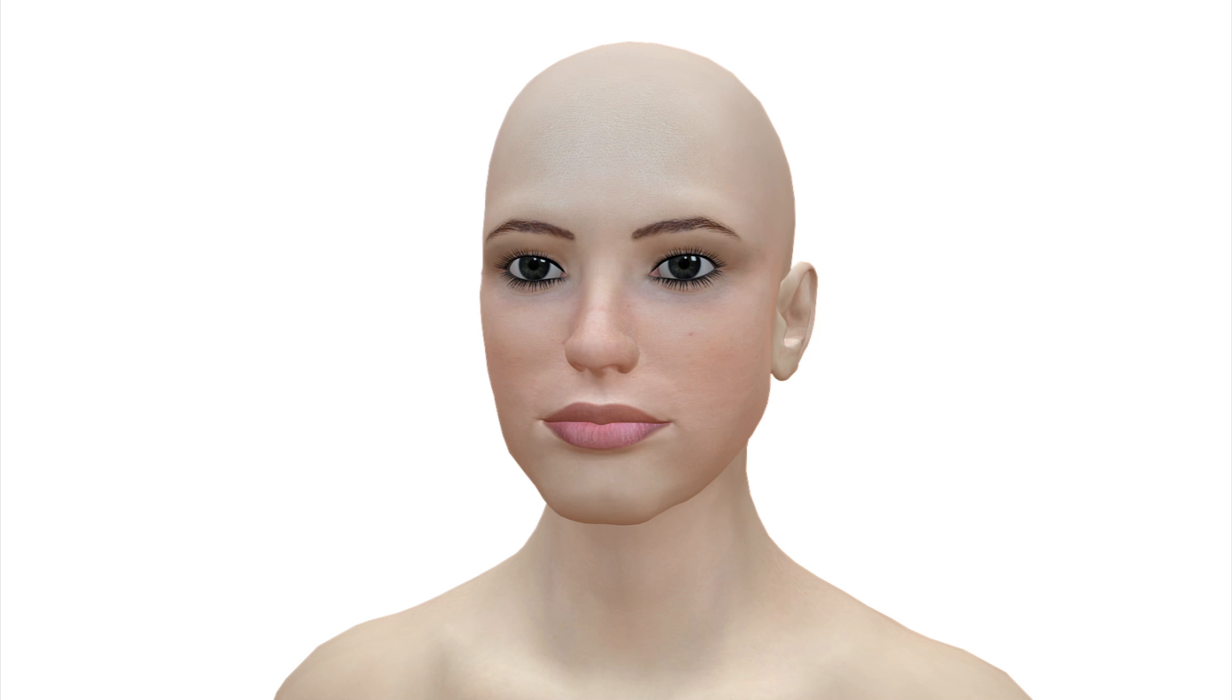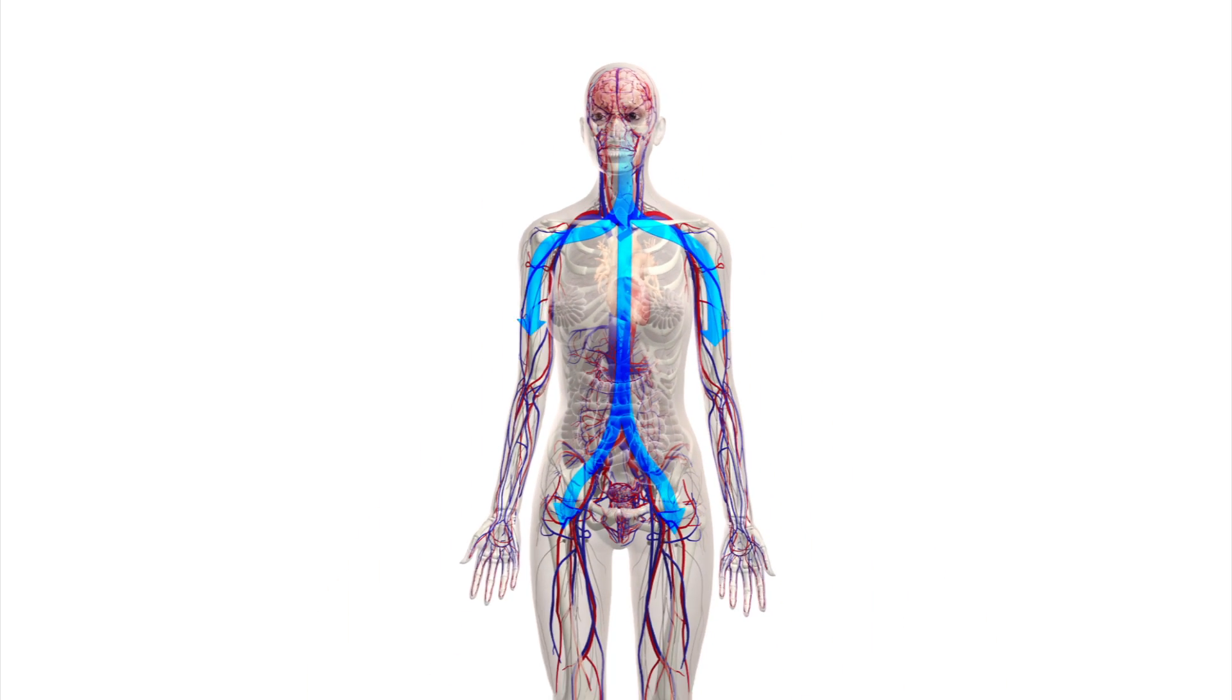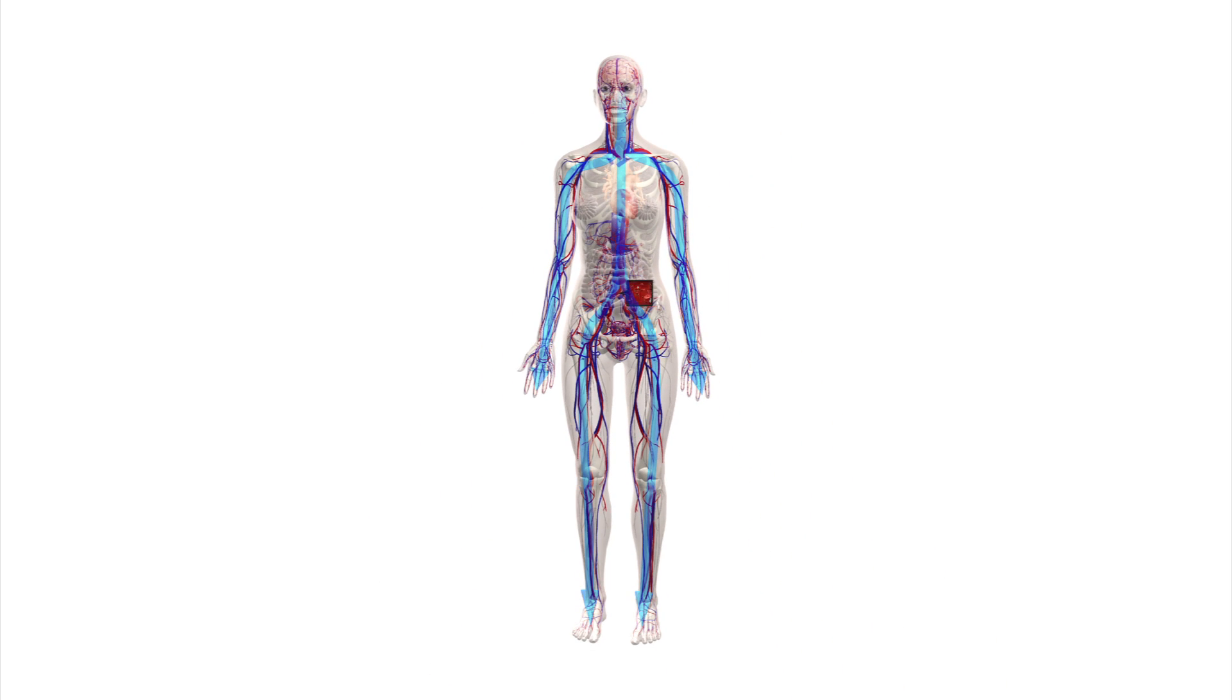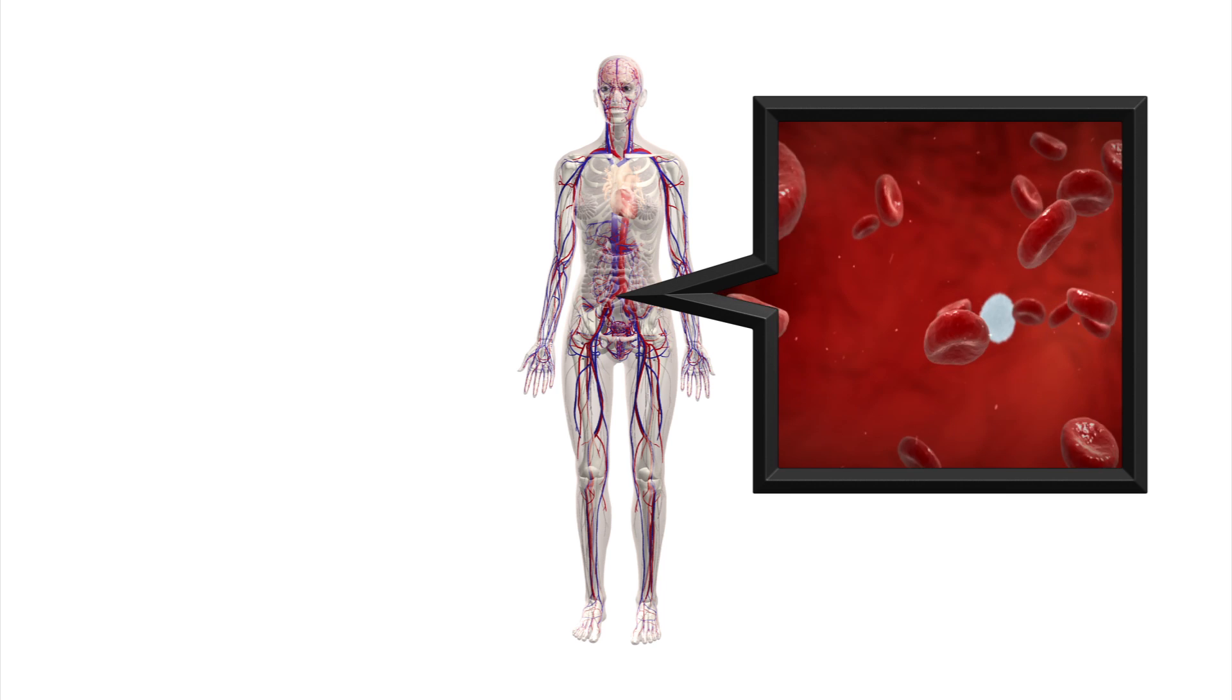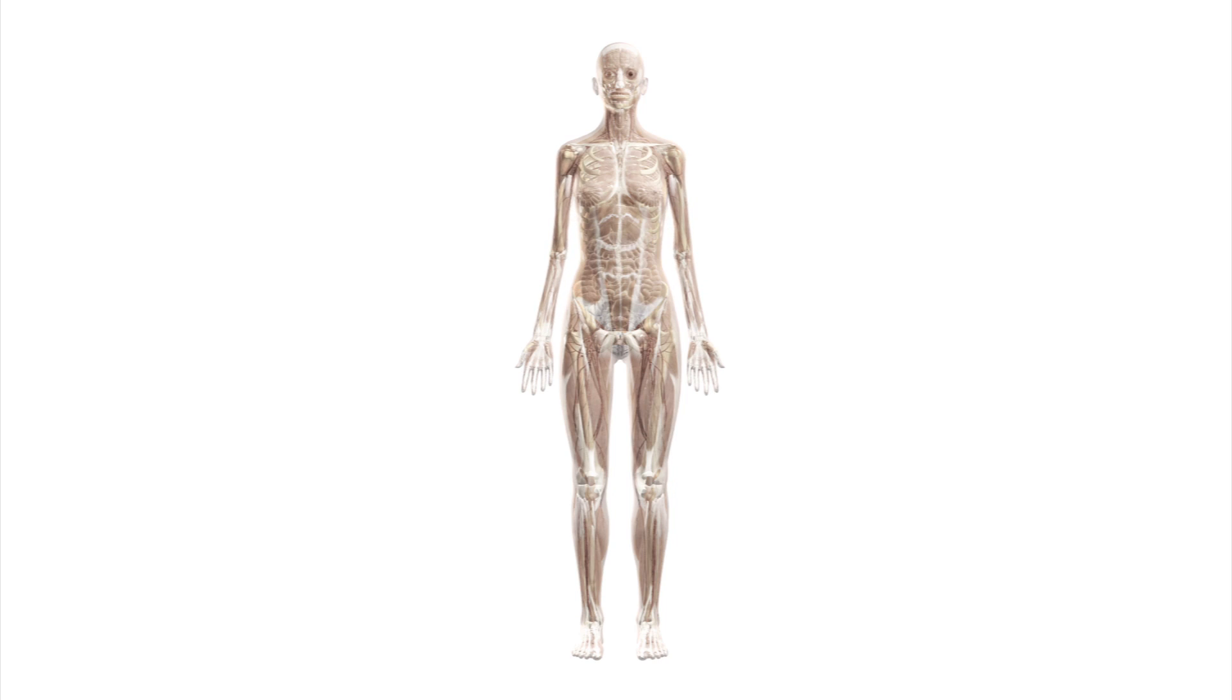The brain would think the body had too much blood and would tell the body to reduce blood by up to 20%. Without having to fight so much gravity, muscle mass would waste away by up to 20%.